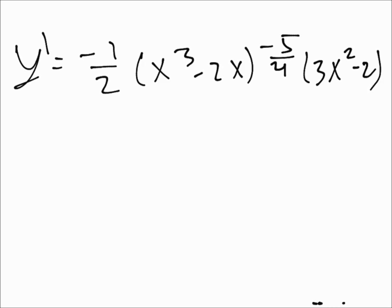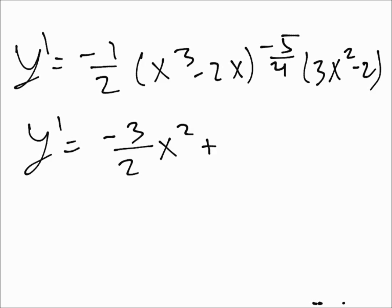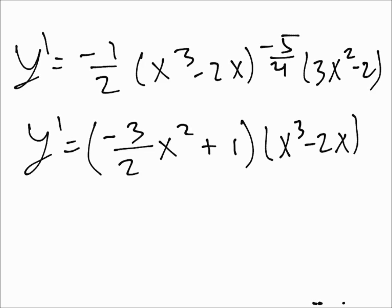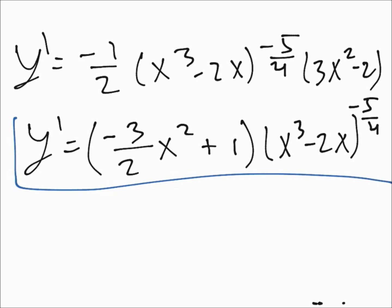We can simplify further: negative three-halves x squared plus 1, times x cubed minus 2x to the negative five-fourths. And that's our result.